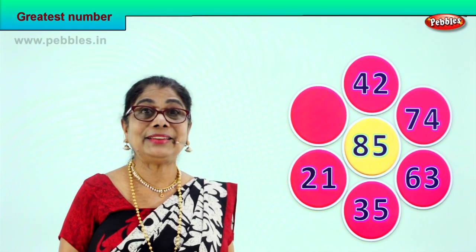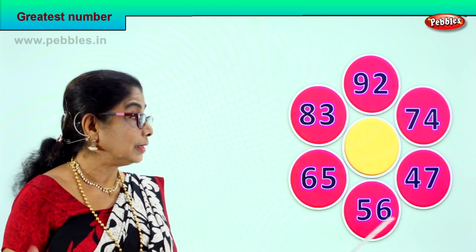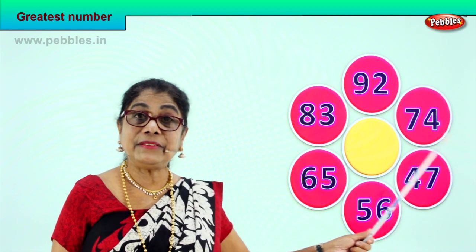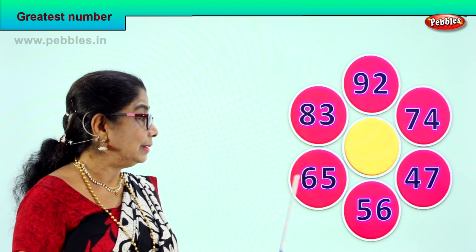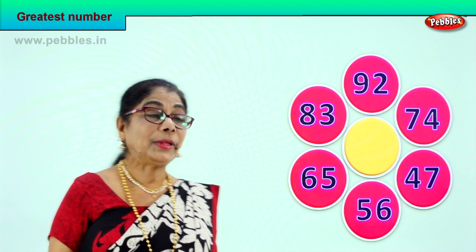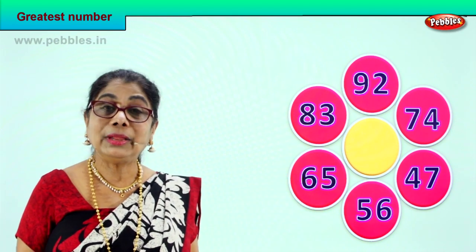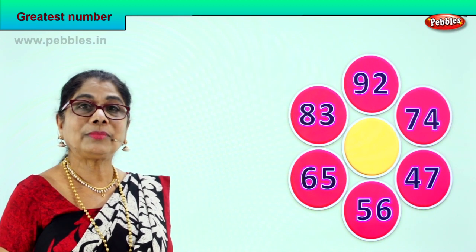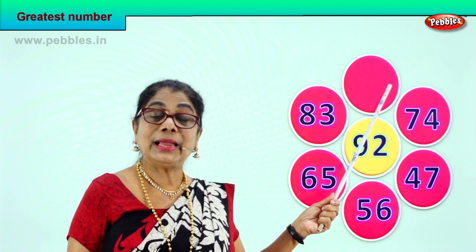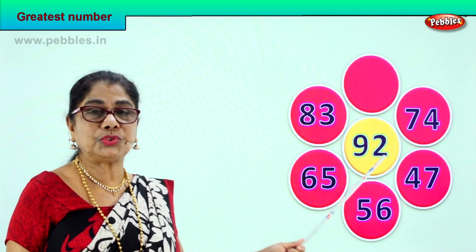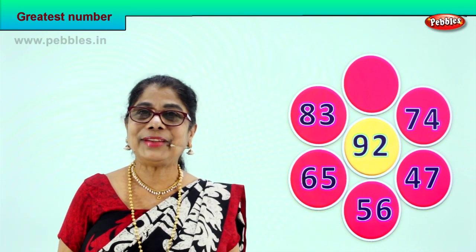Let's look at another set of numbers and another exercise. 56: 5 tens. 47: 4 tens. 74: 7 tens. 92: 9 tens. 83: 8 tens. 65: 6 tens. Now let's find the number with the highest tens. 9 tens — 92 is the biggest number of all because it has 9 tens and 1. Among all the numbers, 92 has 9 tens, so it's the biggest. Did you enjoy finding the greatest number?